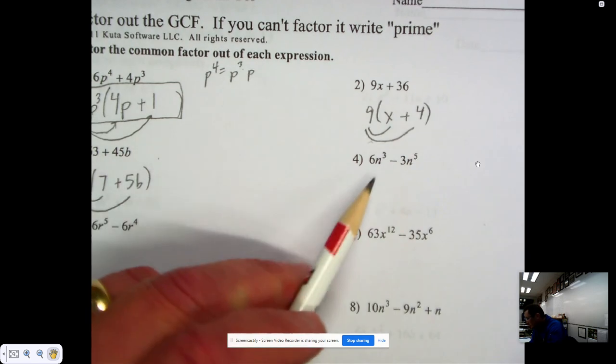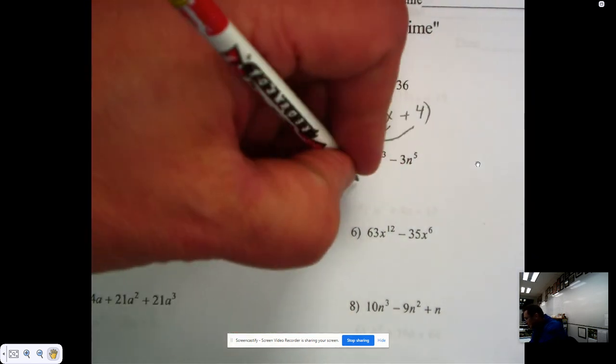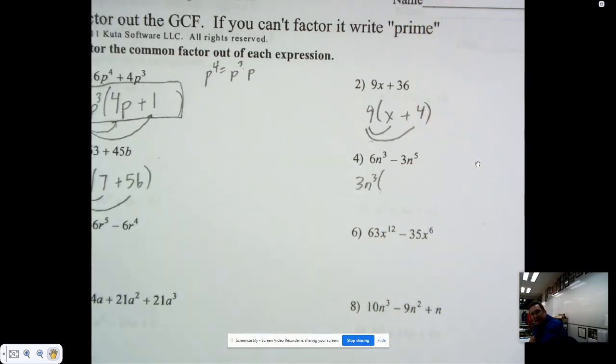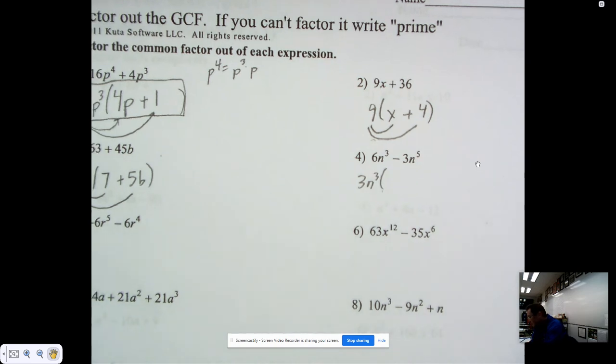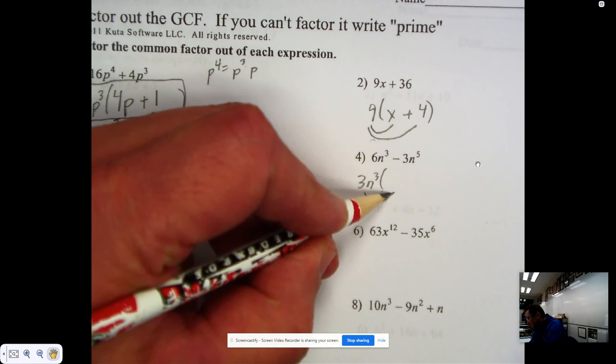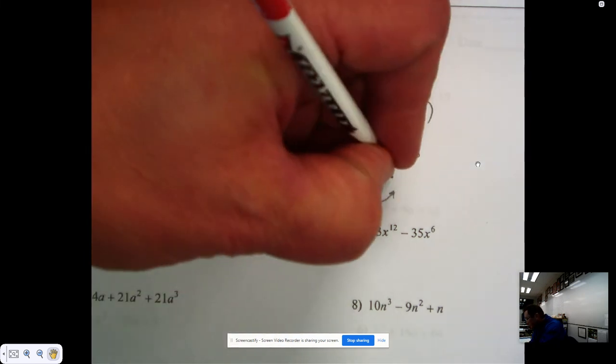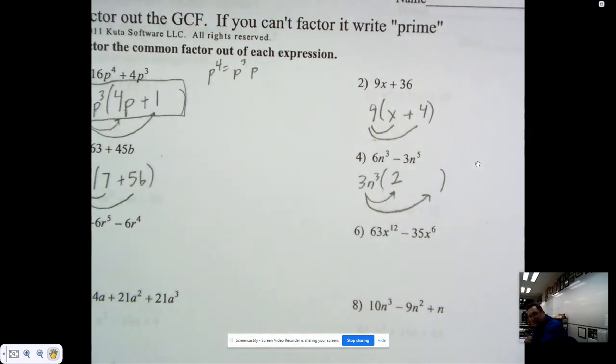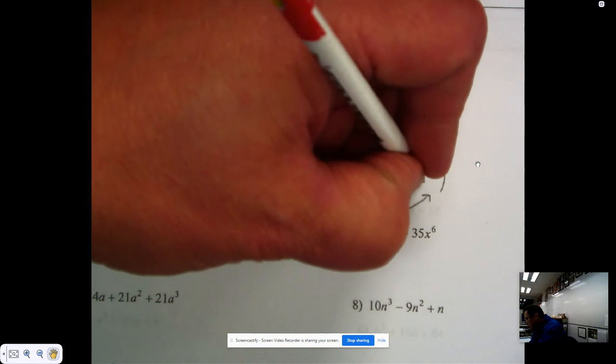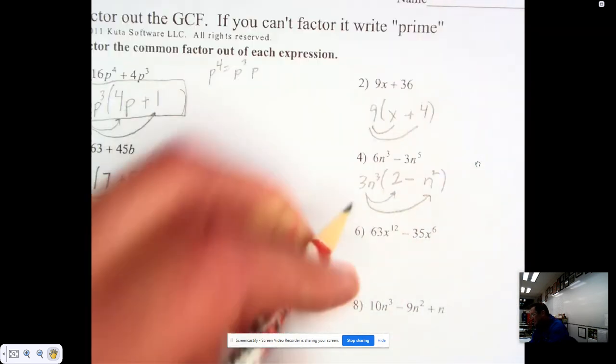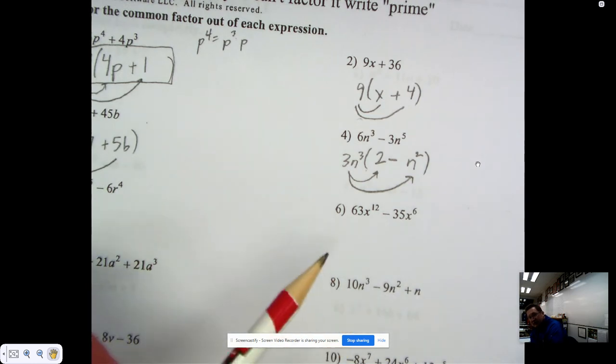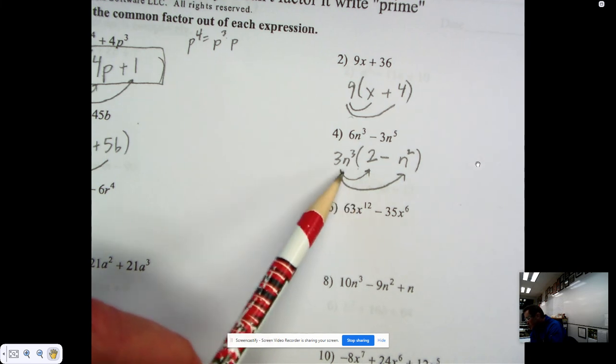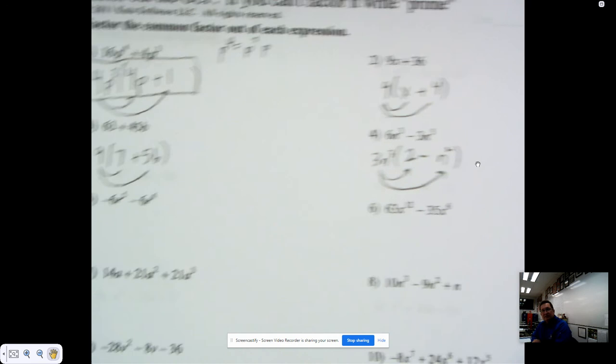On the next one, we know that 3 is the common factor of 3 and 6, and that n cubed would be the common factor of n cubed and n to the 5th. Now we ask ourselves: 3n cubed times what is 6n cubed? The answer to that is 2. And then 3n cubed times what is 3n to the 5th? The answer to that would be n squared. Don't forget to put our minus sign in here. Then we might check again. If we multiply this out, would we have the same thing? 3n cubed times 2 and 3n cubed times n squared.